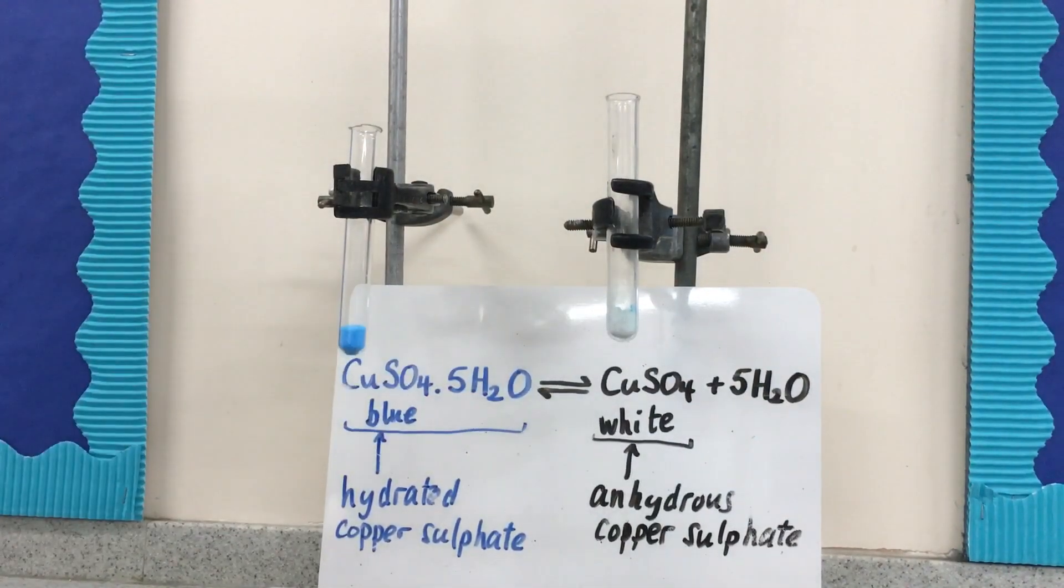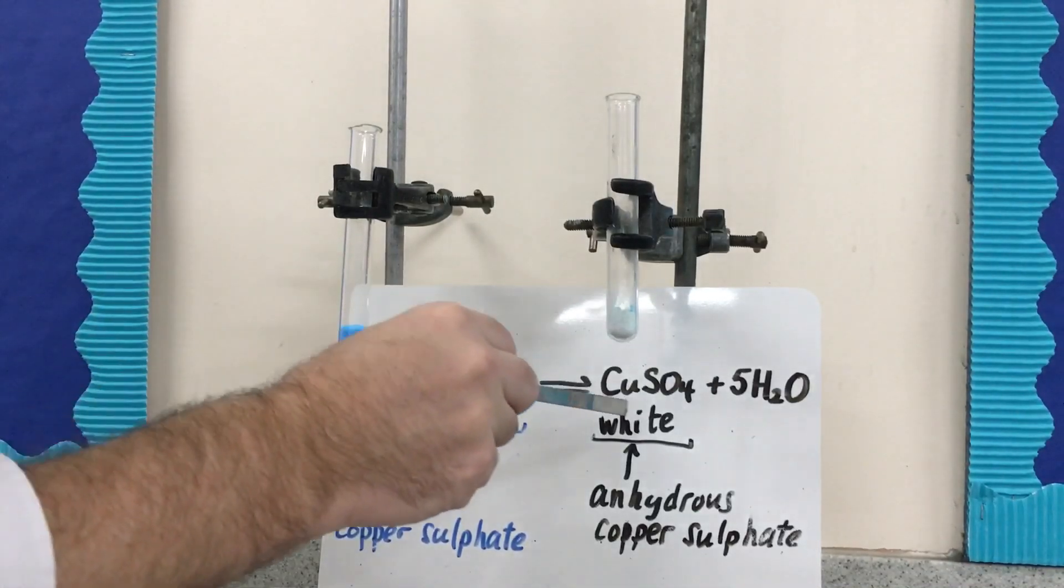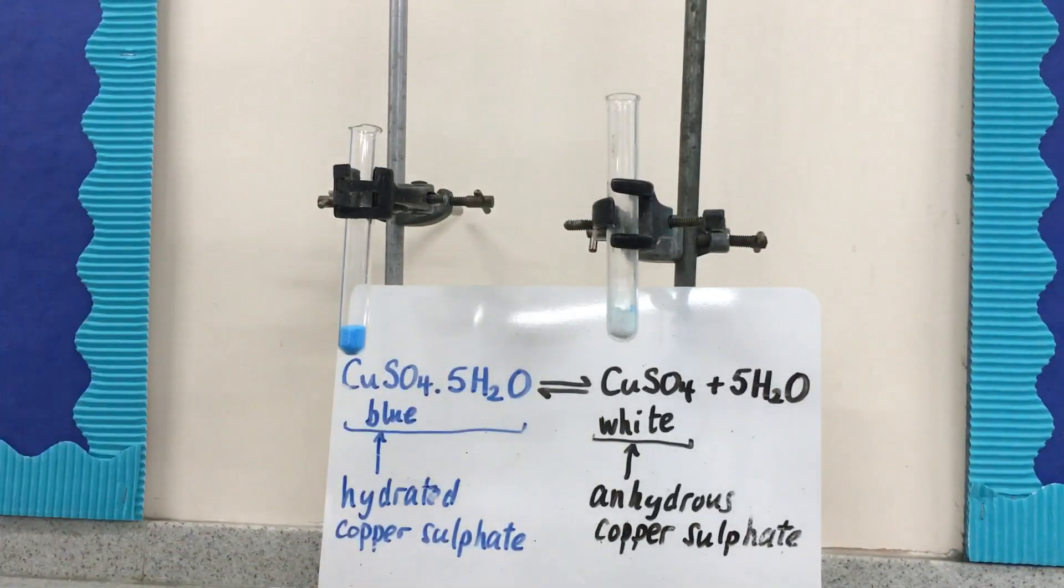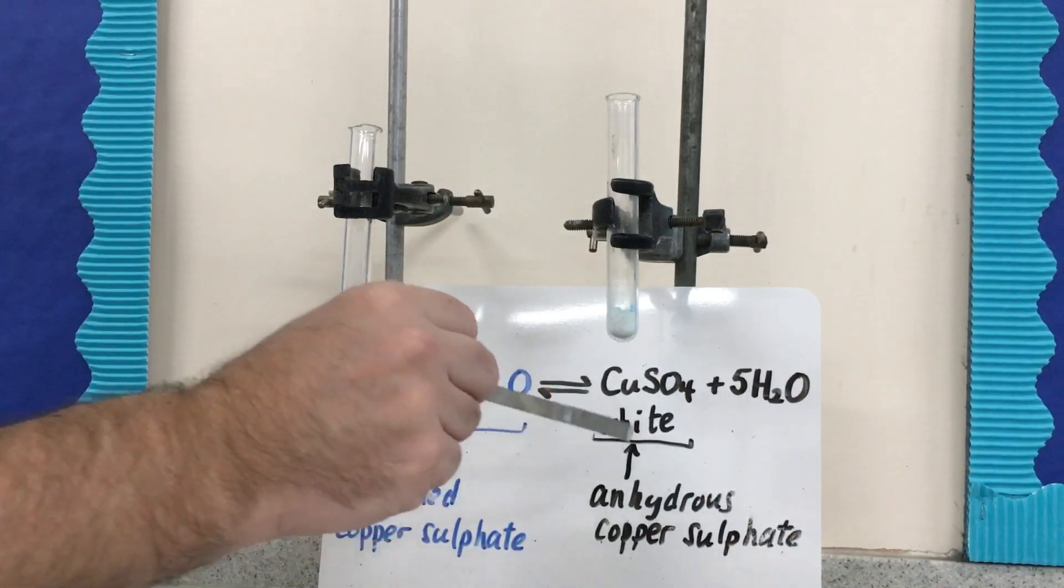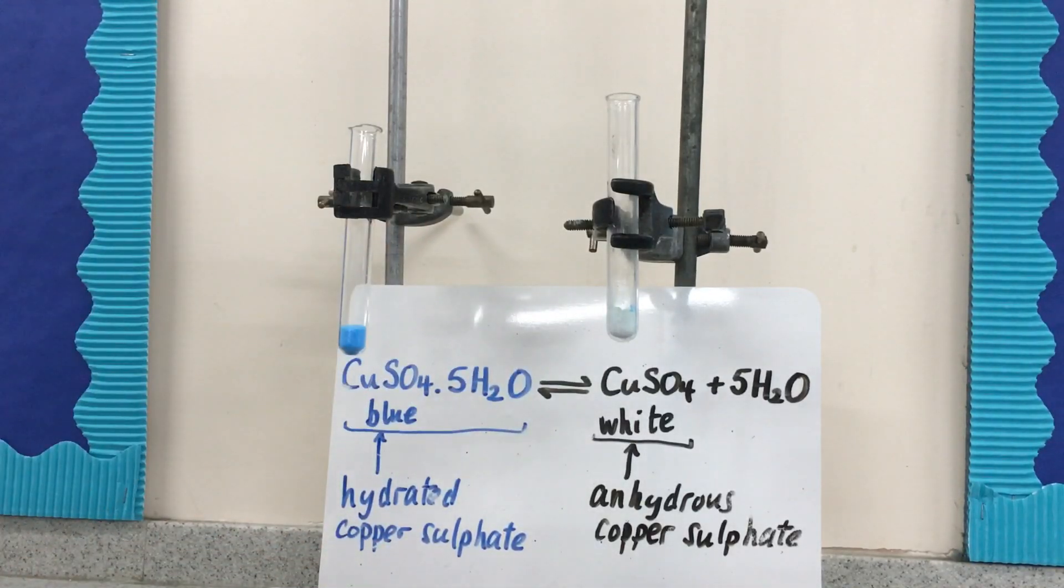Because we know the blue copper sulfate turns white when water is removed, we can turn anhydrous or white copper sulfate blue by adding water. So if anhydrous or white copper sulfate turns blue when a liquid or solution is added, we know that the liquid or solution we're adding contains water.